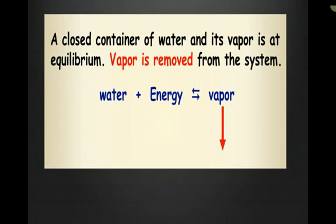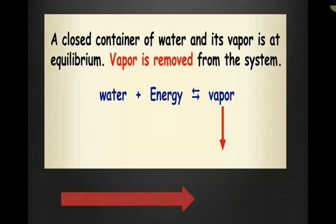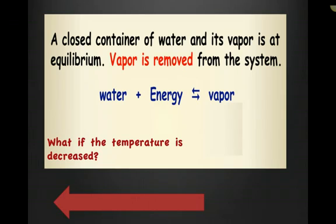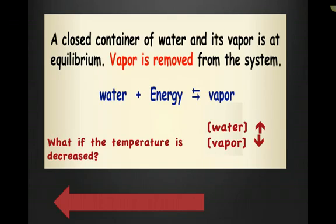Let's look at another example. We have a closed container of water and its vapor at equilibrium. What happens if the vapor is removed from the system? If the vapor is removed, the equilibrium shifts in a direction to replace that vapor — the equilibrium shifts to the right. Now what happens if the temperature is decreased? A decrease in temperature favors the exothermic reaction. The reverse direction is exothermic, meaning this equilibrium is going to shift to the left. Water is going to increase and the vapor is going to decrease — this makes sense because if you decrease the temperature, a gas should change into a liquid.